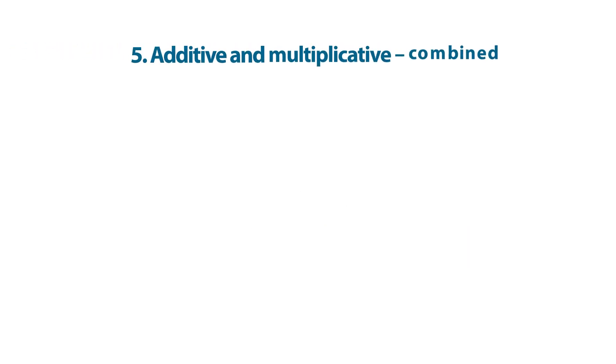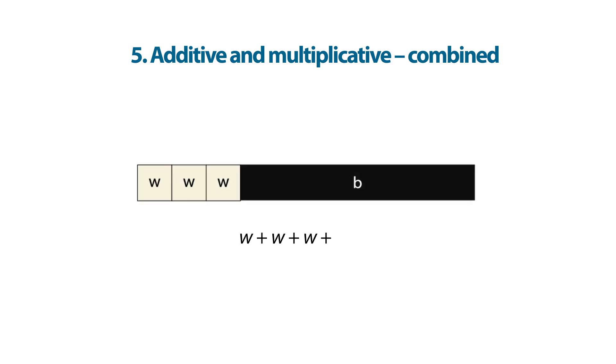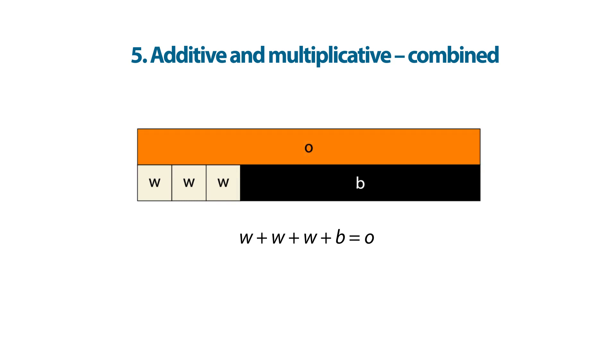Finally, let's model a relationship that combines additive and multiplicative structures. In an additive equation, white plus white plus white plus black is equal to orange. Repeated addition is often more efficiently modelled as a multiplicative relationship, giving us 3 times white plus black is equal to orange.